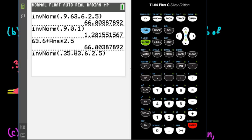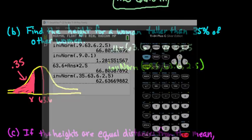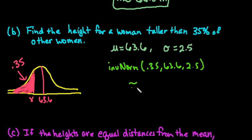And so again, if you don't have the option of the table, you would just have it look like this, and then hit enter, so 62.64 would be our approximate height of a female who is taller than 35% of the population of other women.